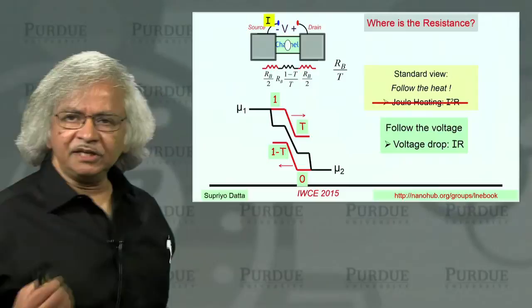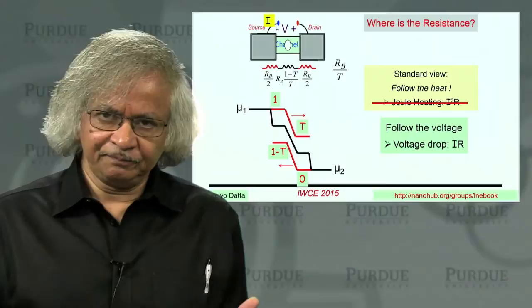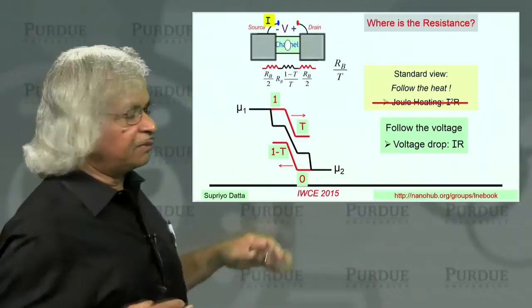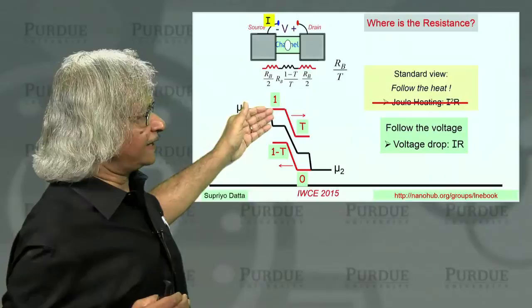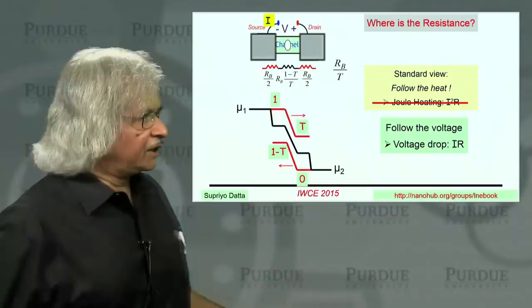The thing is, this voltage you should not associate with the potential of the average energy of the carriers. It should only, what it reflects, this electrochemical potential, is the filling of the levels. So what it tells you is that on the left-hand side of this barrier, the states are relatively well-filled. As soon as you cross the barrier, they're relatively empty.